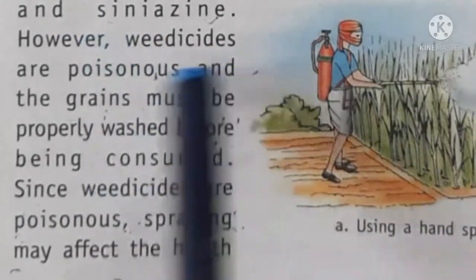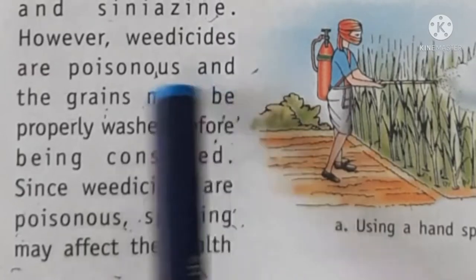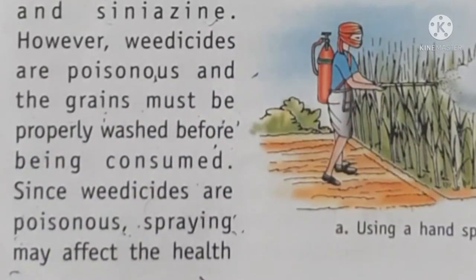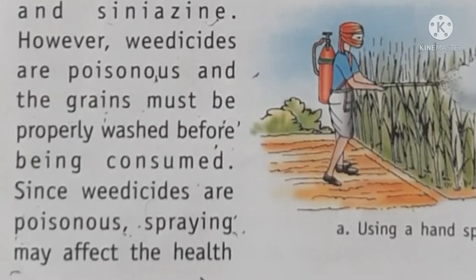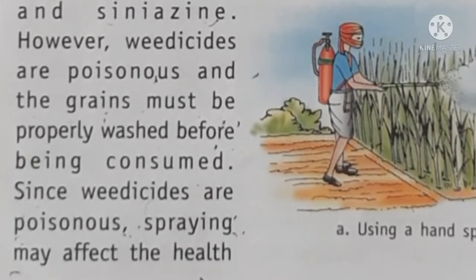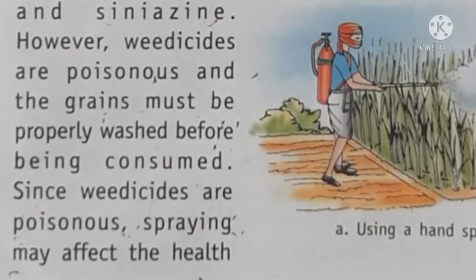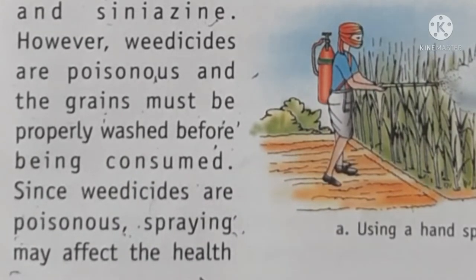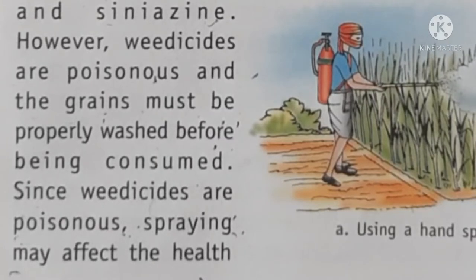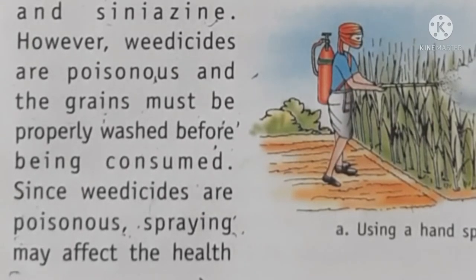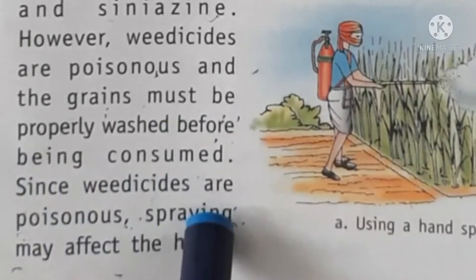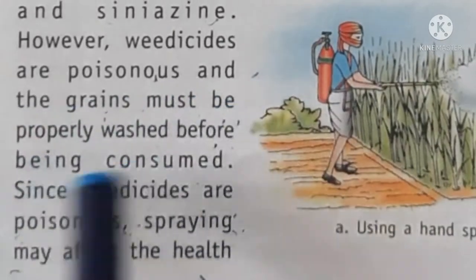However, weedicides are poisonous chemical substances. Whenever you use grains or any crop that has had weedicides applied, always make sure you wash it properly before eating. Because weedicides have been used in your crops, if you eat them without washing, the poisonous chemical weedicide will go into your body and you can have health issues.